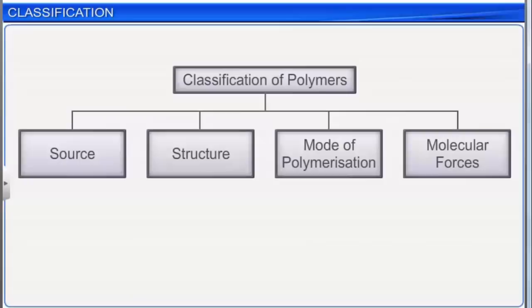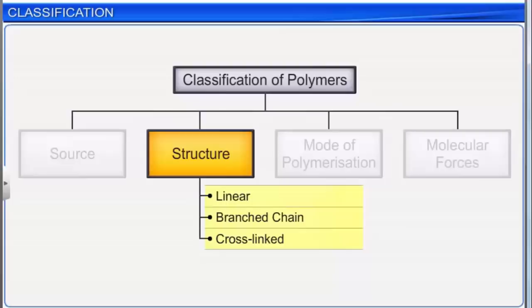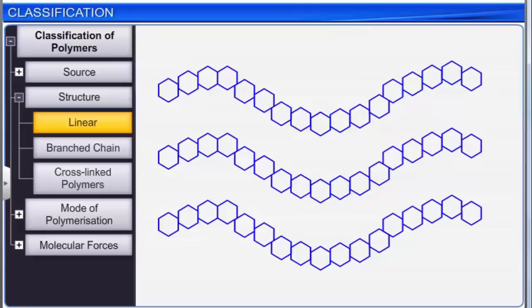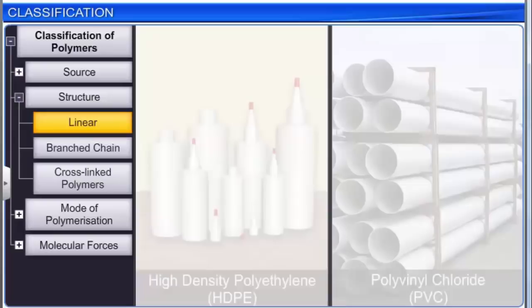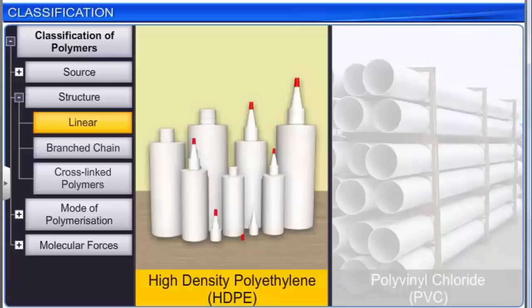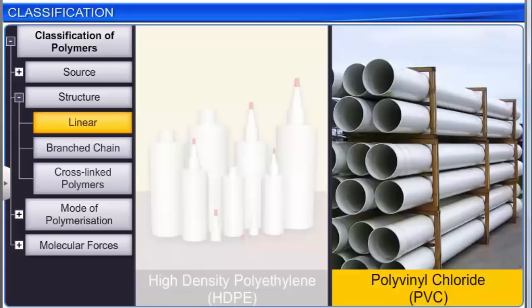On the basis of their structure, polymers are classified into three types: linear, branched chain, and cross-linked polymers. Linear polymers are made from long straight chains. Examples include high-density polyethylene (HDPE) and polyvinyl chloride (PVC).